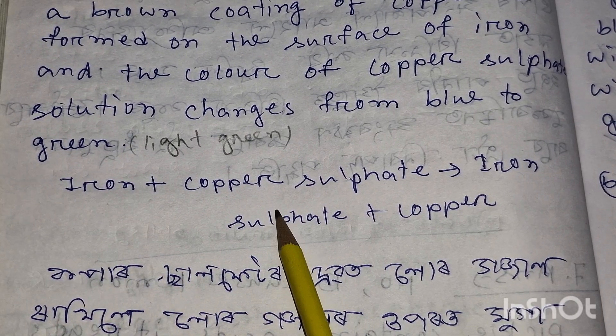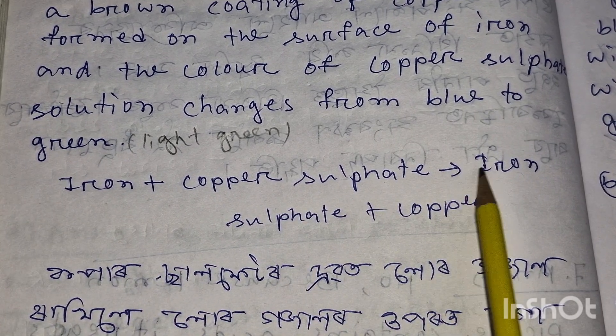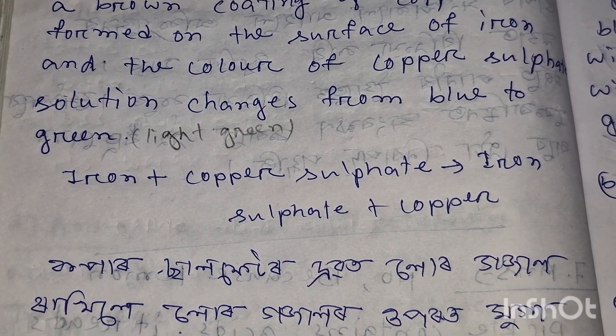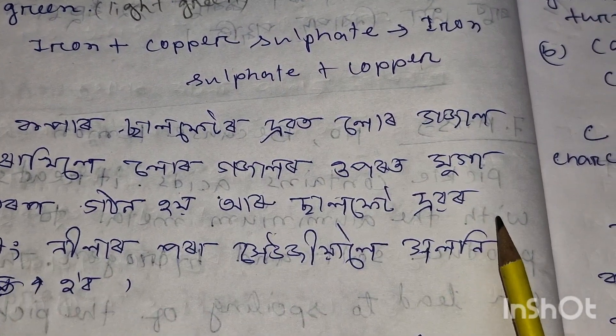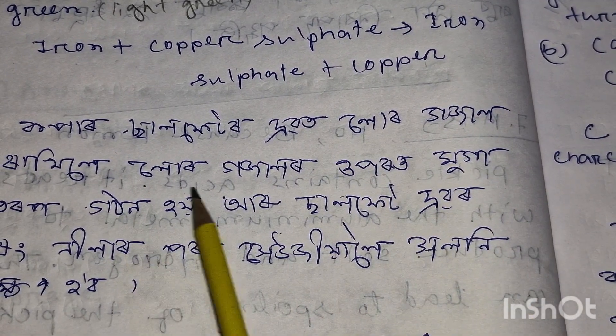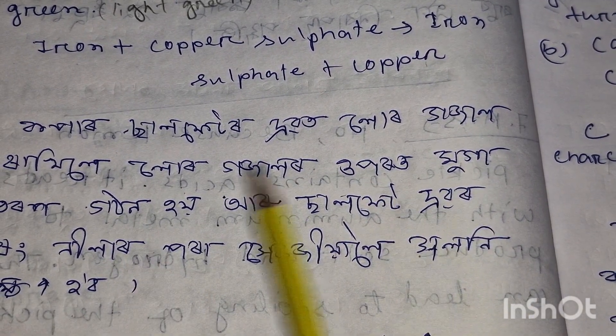The chemical equation is: Iron + Copper Sulfate solution → Iron Sulfate + Copper.